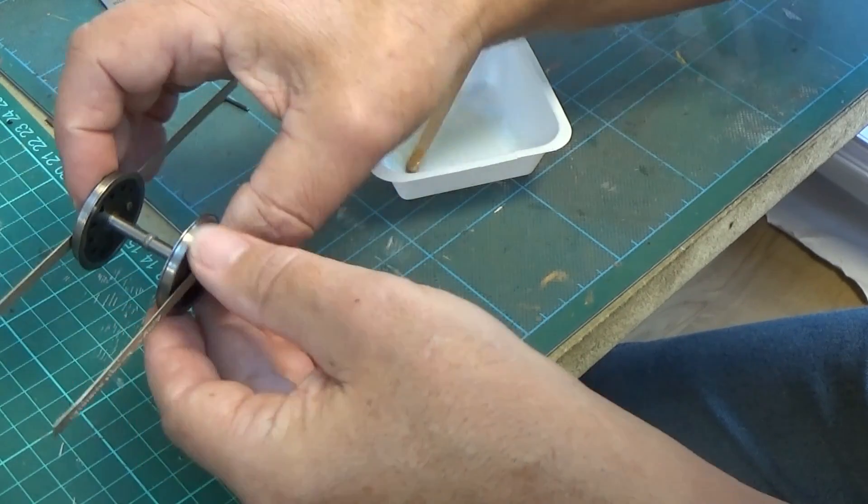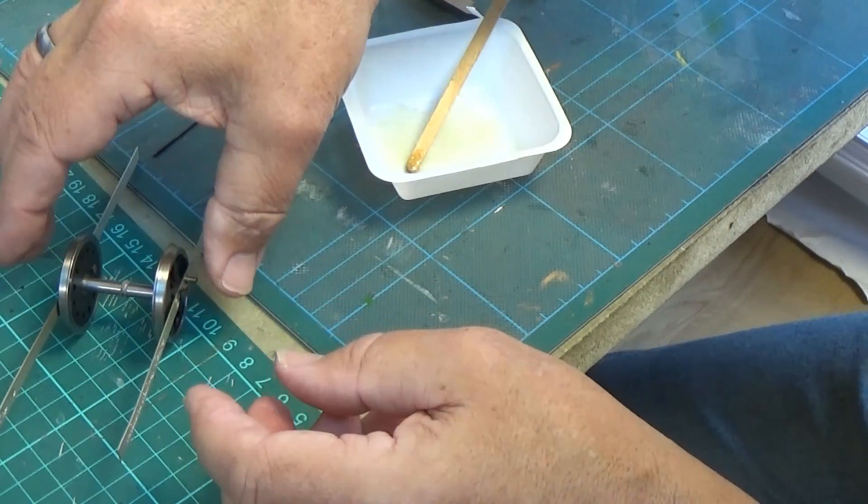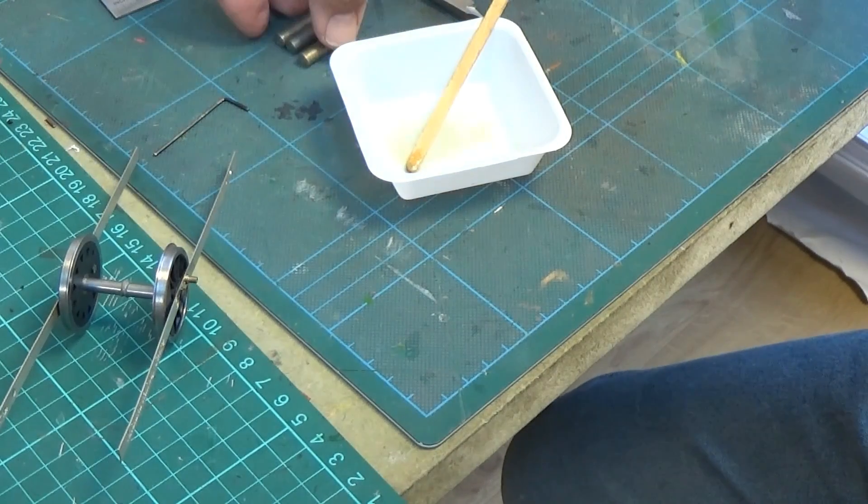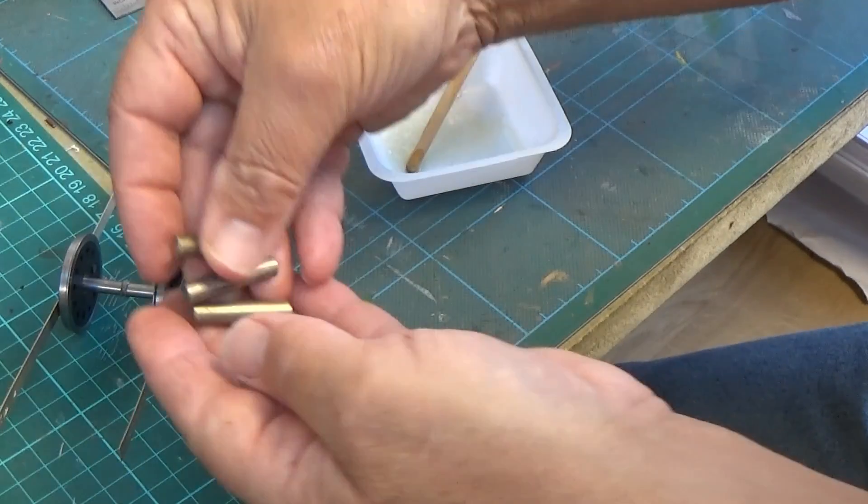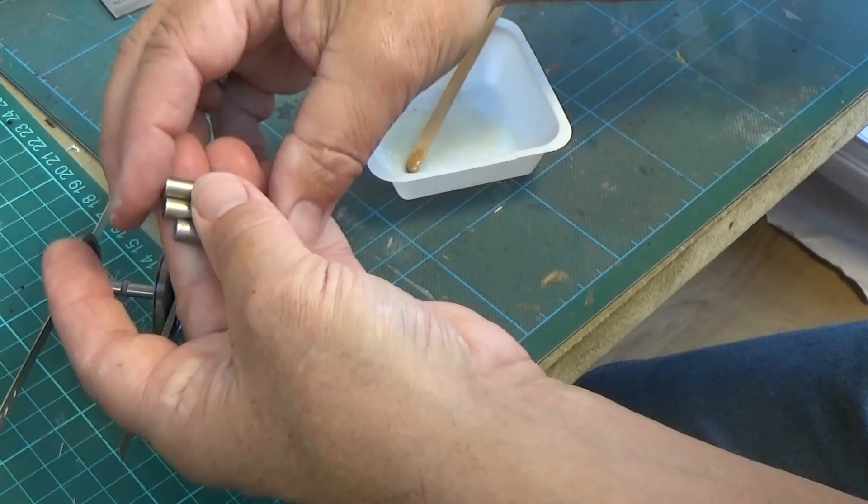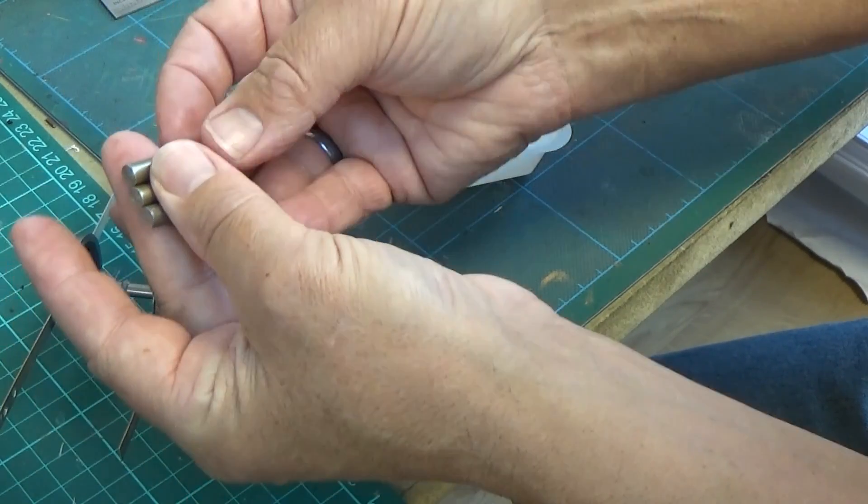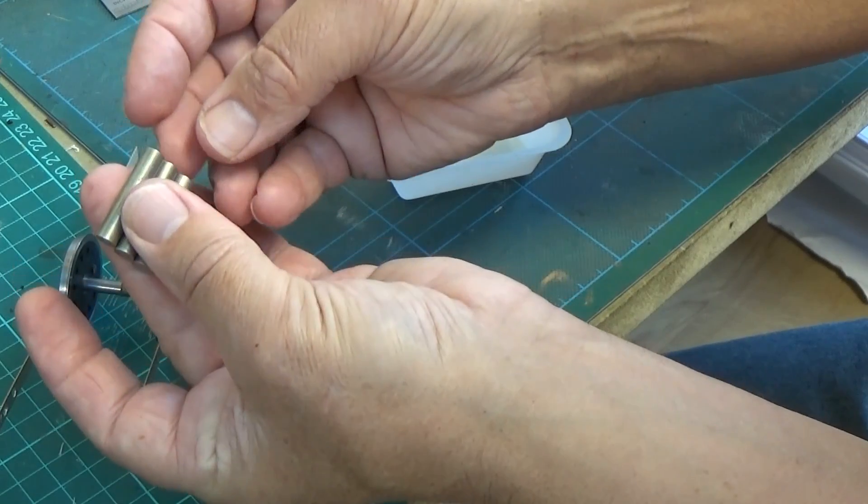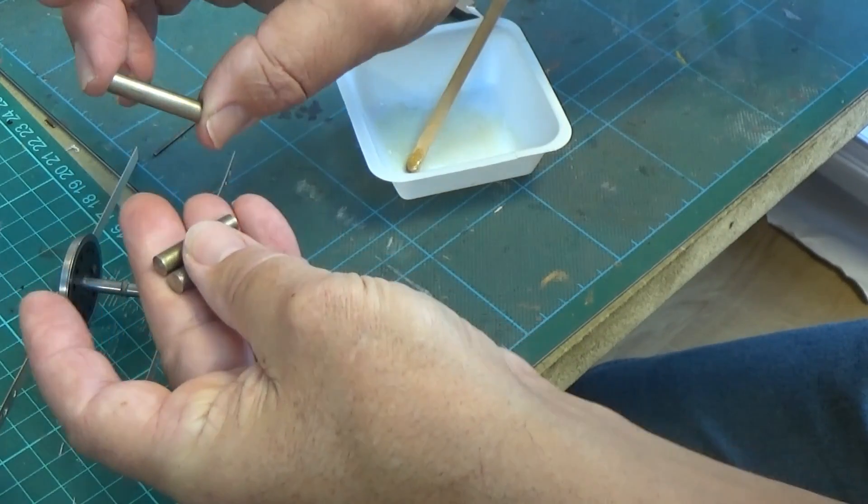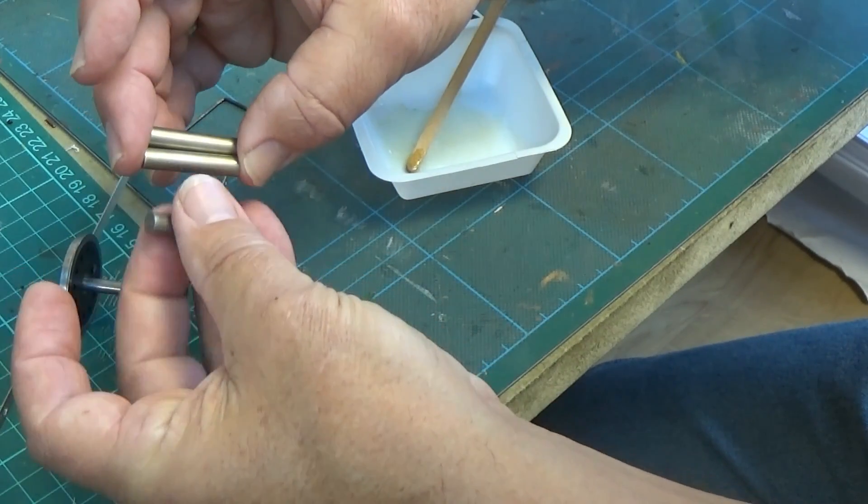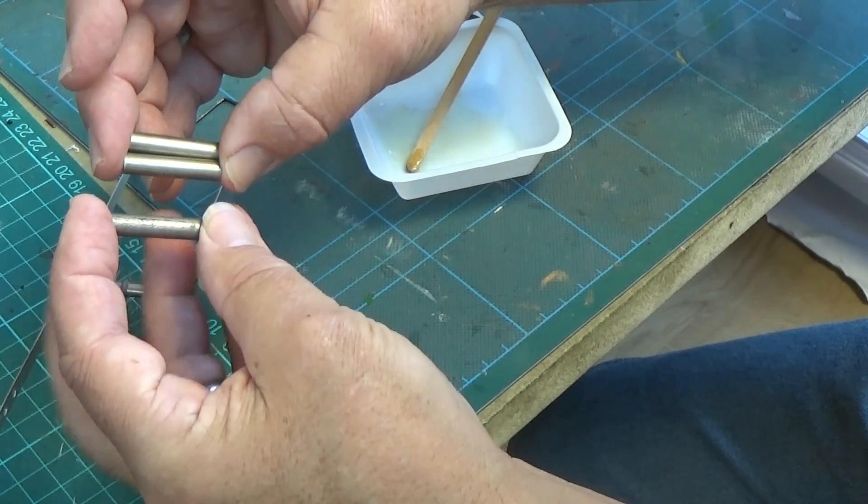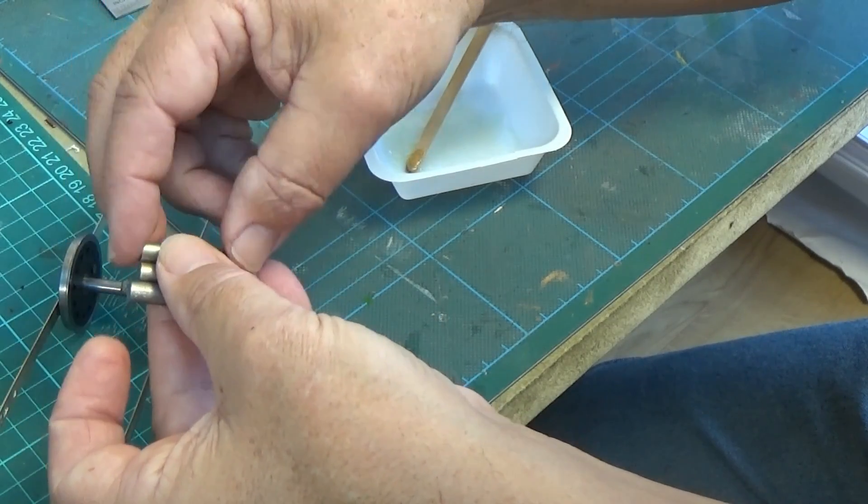And now, we just need to align it. And to do this, I have three components. These are just pieces of metal bar that have been put in the lathe and turned to exactly 29.2mm between the two end faces. And they will sit between the wheels.